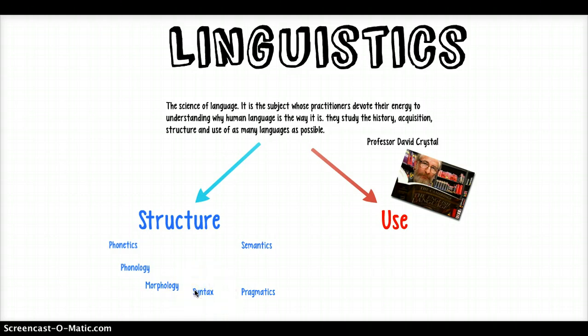Syntax is the examination of how meaningful structures are put together out of different words. The famous syntactic example is 'the cat sat on the mat' — that's syntactically correct, it works, it's functional. You could also have 'the cat purred on the mat,' which would equally be functional. You could even have 'the cat juggled on the mat,' which whilst it might not make sense, is still syntactically legitimate, because 'juggled' is the past tense of a verb.